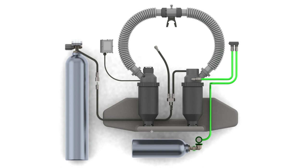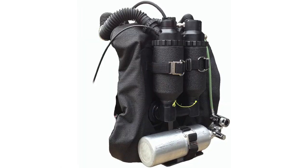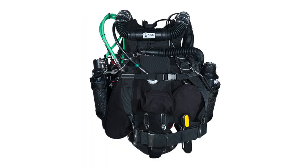Important to remember, these two rebreathers are essentially the same unit. The main difference, of course, is that the Spirit is a backmount unit with the scrubbers mounted on the diver's back, and the Sidewinder is the sidemount unit with the scrubbers mounted on the diver's sides.